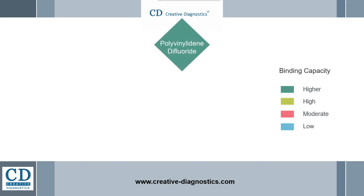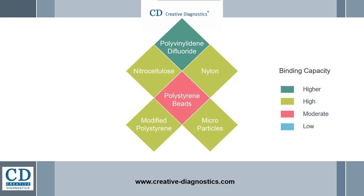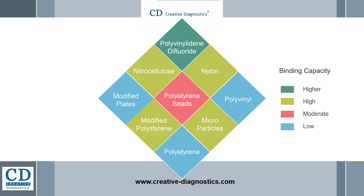Polyvinylidene difluoride has the highest binding capacity. Nitrocellulose, nylon, modified polystyrene, and microparticles have high capacity. The binding capacity of polystyrene beads is moderate, while polystyrene in plates or tubes, polyvinyl and modified plates, have low binding capacity.